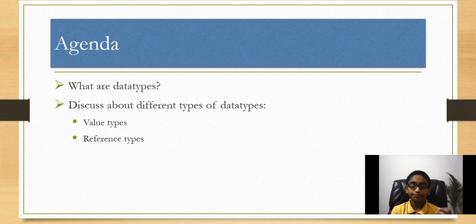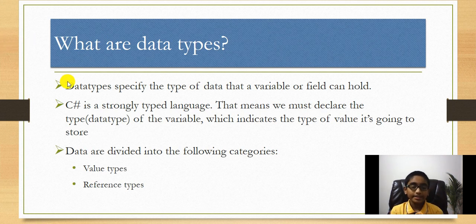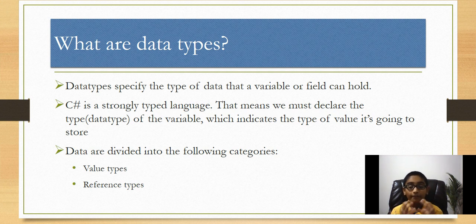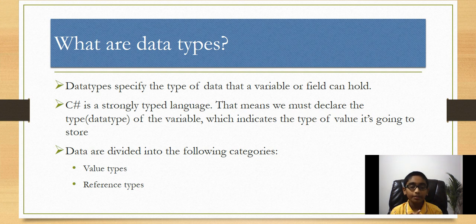So first I'm going to talk about what data types are. Data types specify the type of data that a variable or field can hold. C-Sharp is a strongly typed language, which means that we must declare the type of the variable, indicating the type of value it's going to store. Data types are divided into value types and reference types.